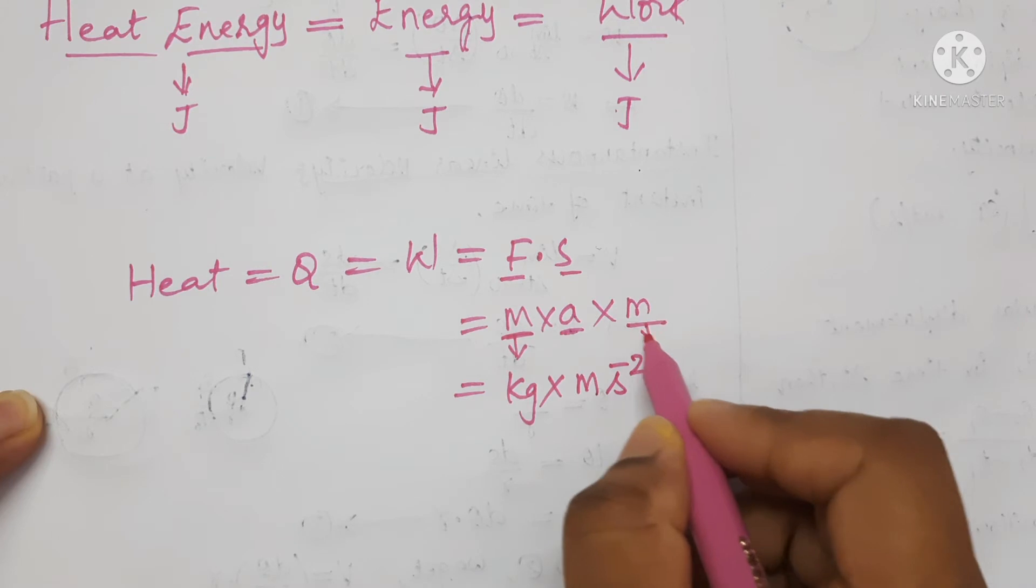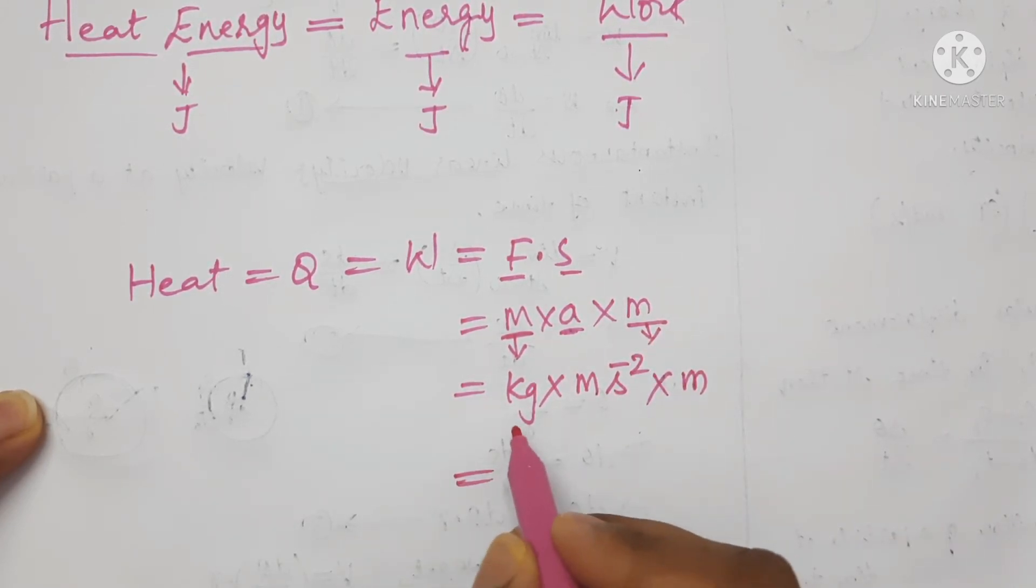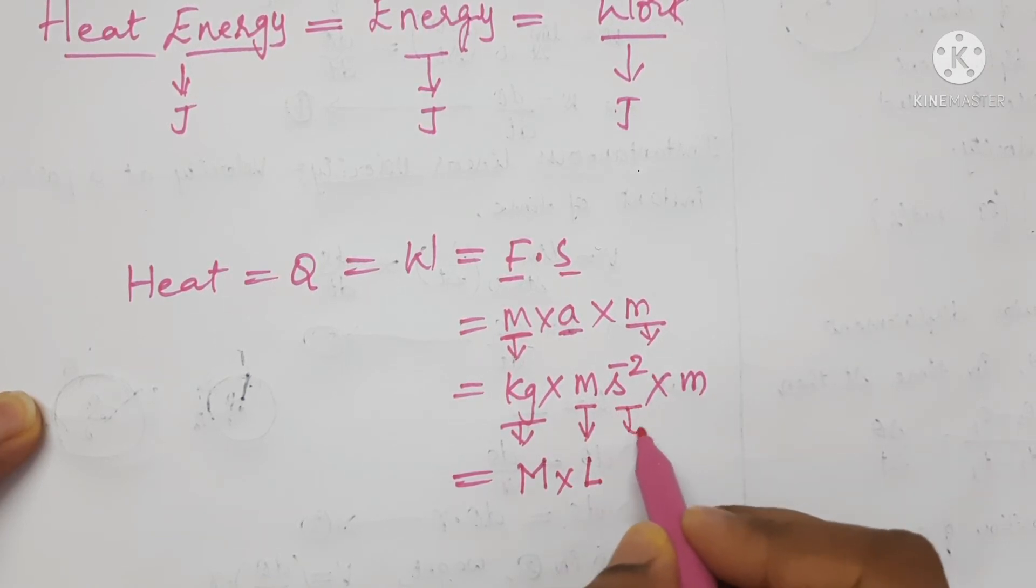I already written here SI unit and here it is meter. And now write the dimensions. kg is expressed in terms of capital M, meter is expressed in terms of capital L, second is expressed in terms of capital T.